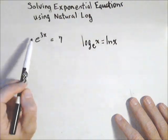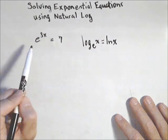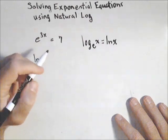When we have an equation like this, we have two choices on how to solve it. We could rewrite it as a log, so the base is e, so that automatically makes it ln of x.